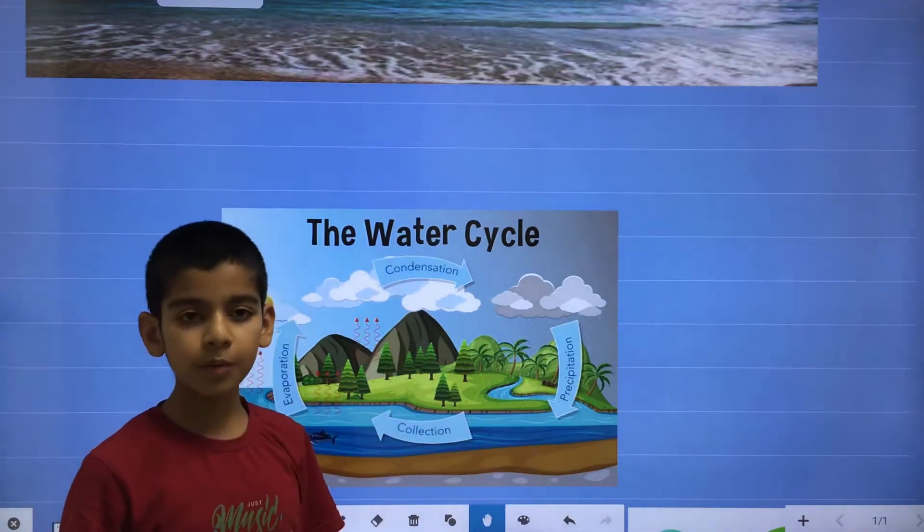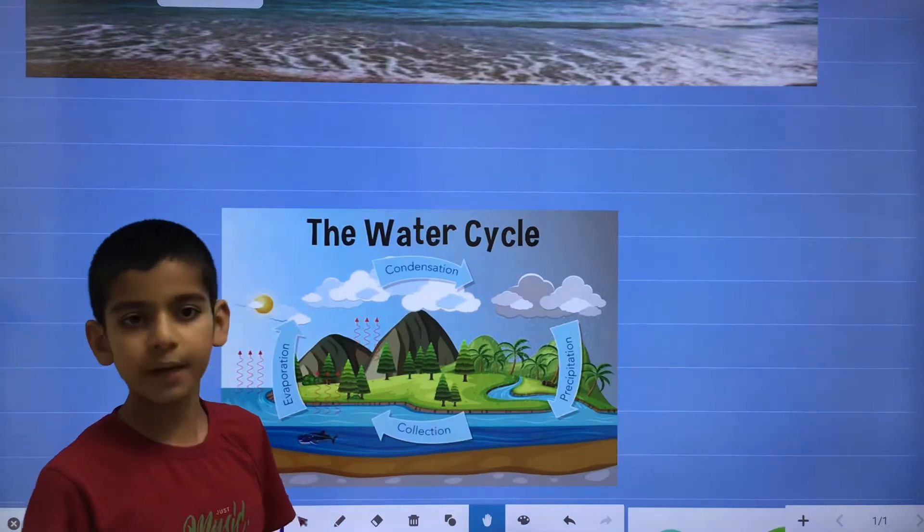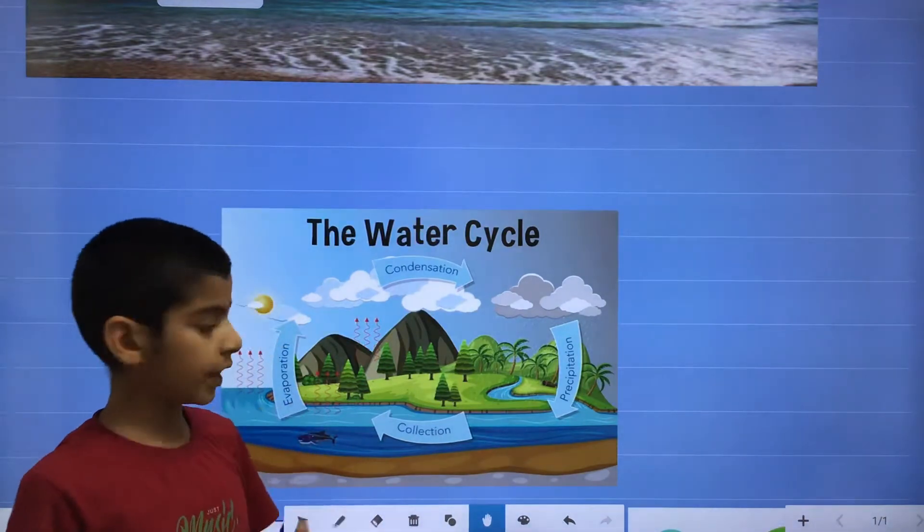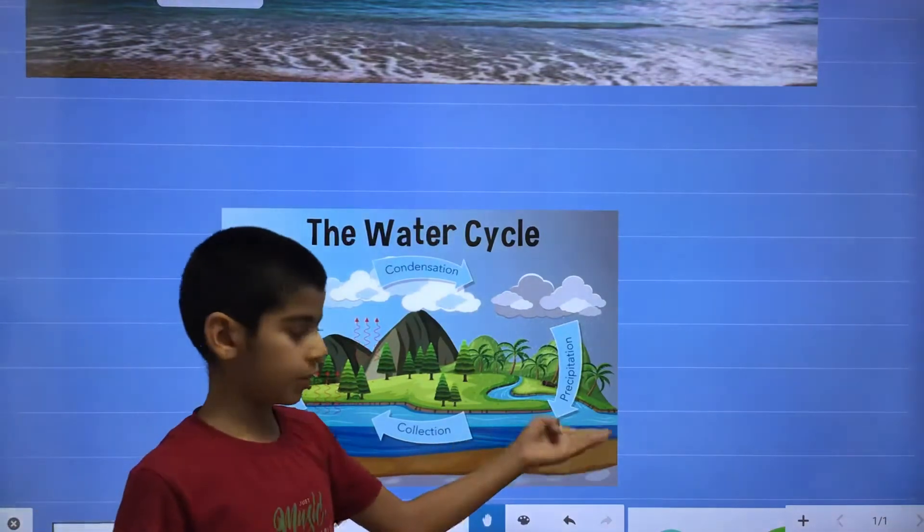And from this water vapor, the clouds are formed, so that process is known as condensation. And when the clouds get heavy, so they do rain, so that process is known as precipitation.